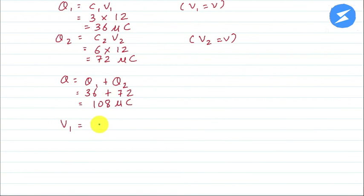So we will now find the final voltage. V1 will be equal to Q upon C1. If we put the value, Q is 108, C1 was 3, so we get 36V.